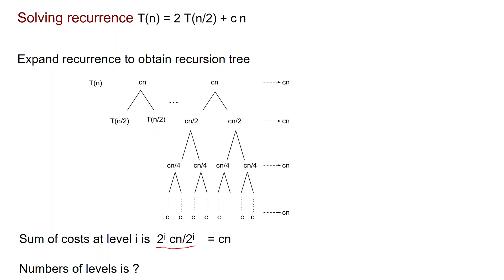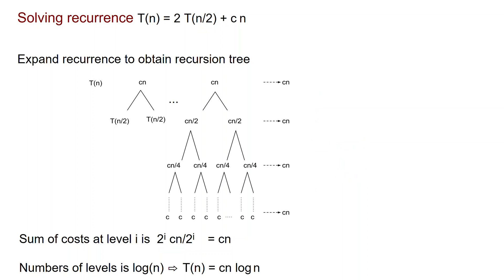Now we ask how many levels the tree has. Every time we divide the input length in half, so the number of levels is log N. Therefore we have a cost of C·N per level over log N levels, giving T(N) = C·N·log N. That is the solution to the recurrence. As we can see, the running time is close to linear — it is linear times the logarithmic function.